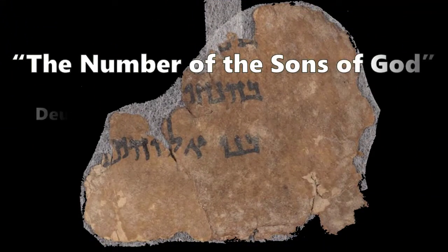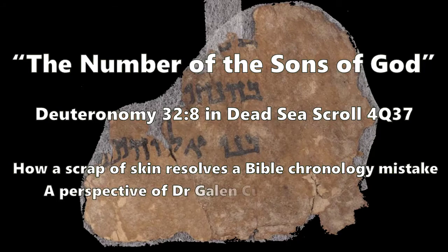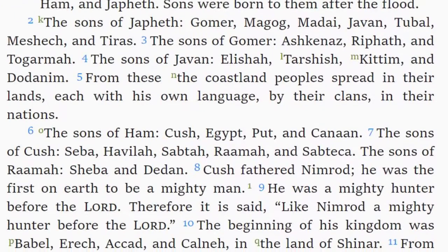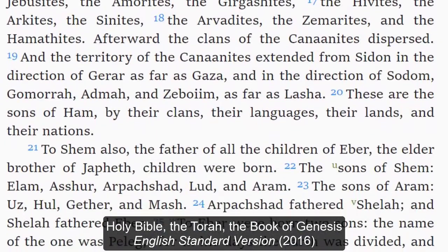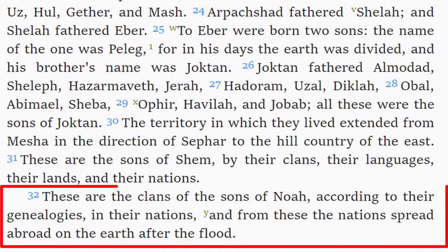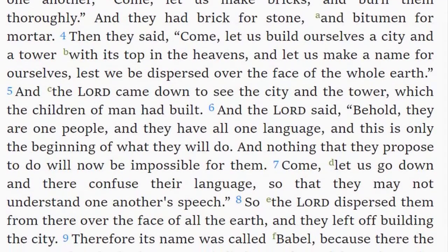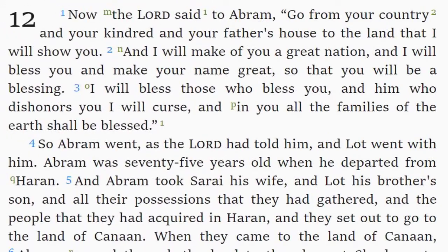In the biblical book of Genesis, the prophet Moses summarized the history of seventy Near Eastern nations. Genesis chapter 10 lists seventy clans that descended from Noah and his sons. Genesis chapter 11 recounts how God scattered the clans, which became seventy nations. Genesis chapter 12 reveals how, about a hundred years later, God promised to bless all the nations through Abraham's descendants, the Israelites.